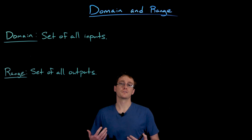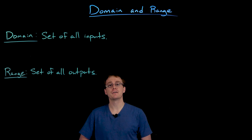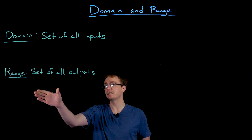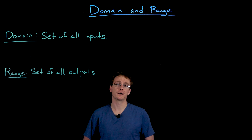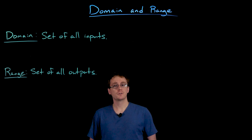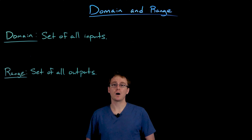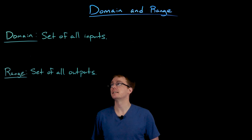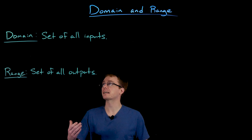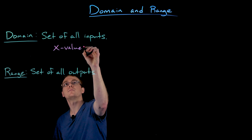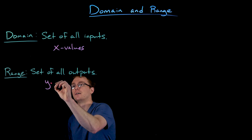When we use the term domain we're usually referring to the domain of a function, and what the domain of a function is is the set of all inputs for that function. On the other hand we also have the range, and that is going to be the set of all outputs for a function. Remember when working with a function we usually have an independent and a dependent variable. The independent variable we think of as the input, usually represented by x, and the output or dependent variable is usually y.